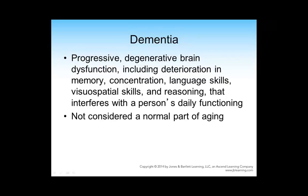By definition, dementia is a progressive, degenerative, irreversible loss of function. We see differences in memory — an early sign is short-term memory loss and difficulty concentrating, depending on the type of dementia. Language skills change, visual-spatial skills decline, reasoning is impaired, and this interferes with the person's daily functioning. It is not considered a normal part of aging, although the statistics for those over 85 are quite high.